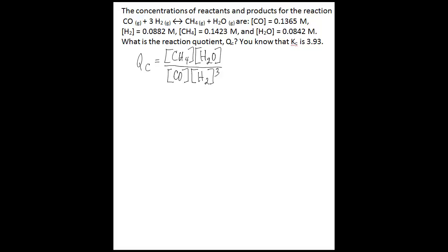QC is some other condition that is usually not equilibrium. What you do is calculate QC and compare it to KC, which is equilibrium, to determine what is happening with the reaction — are more reactants being formed than products, are more products being formed than reactants to reach equilibrium, or are you at equilibrium? You can also have a situation where you know KC, you've measured some concentrations of reactants and products, and you want to know if you're at equilibrium.